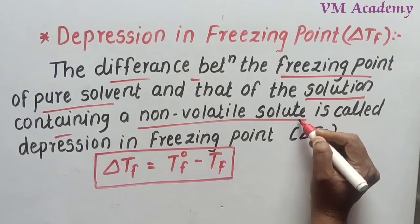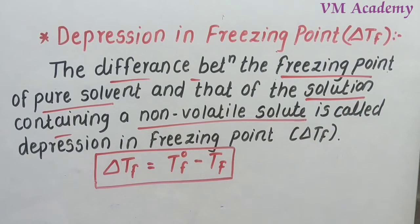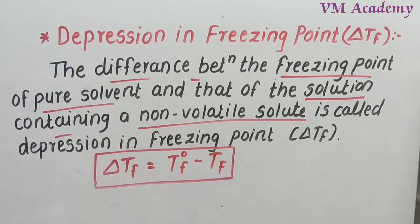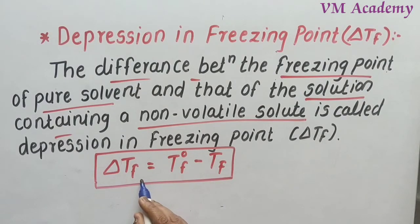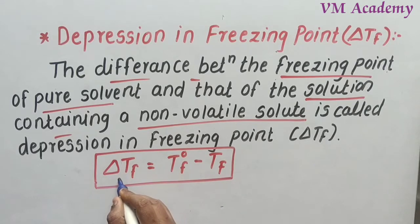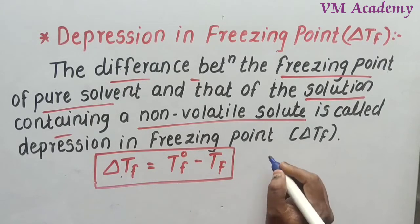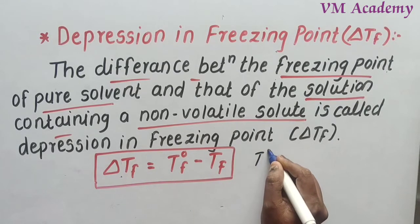By adding non-volatile solute, the freezing point decreases — it is depressed, reduced. The difference between the two is called depression in freezing point. It is denoted by delta TF. The formula is: delta TF equals T-naught-F minus TF. This is depression in freezing point. T-naught-F is the freezing point of pure solvent — in which non-volatile solute has not yet been added.